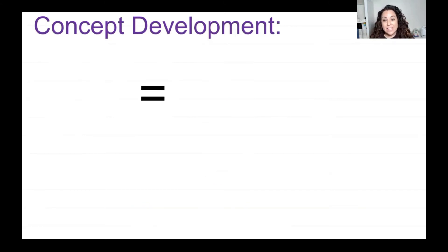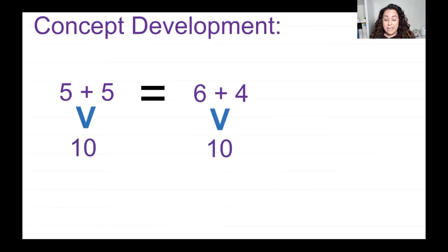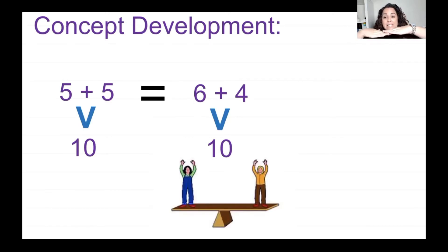Let's talk about the equal sign. Since the beginning of the year I've been saying that an equal sign doesn't just mean the answer to an addition or subtraction problem — it can also mean 'is the same as.' For example, I have 5 plus 5 and 6 plus 4. Well, 5 plus 5 equals 10, and 6 plus 4 also equals 10. So it's balanced, like a seesaw. When you have a 10 on this side and a 10 on this side, it's balanced. So 5 plus 5 is the same as 6 plus 4.